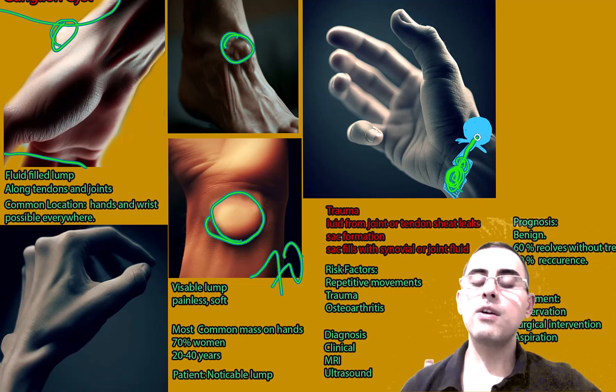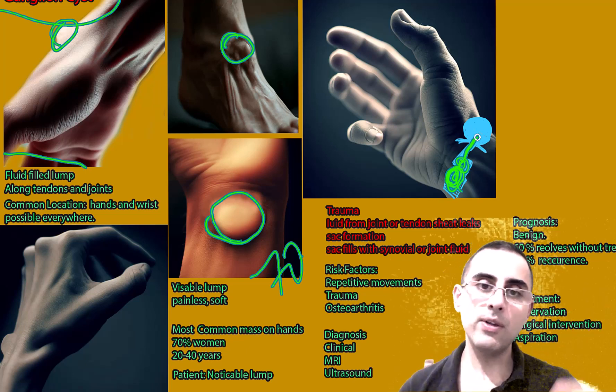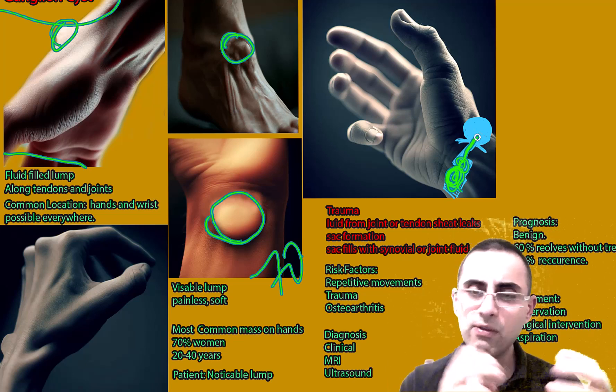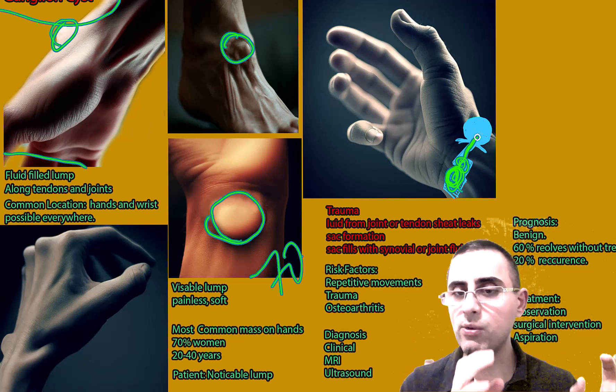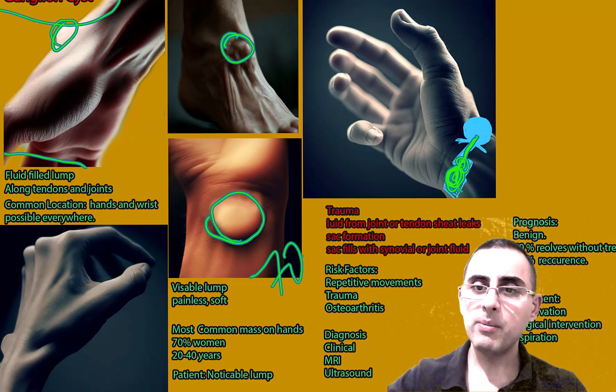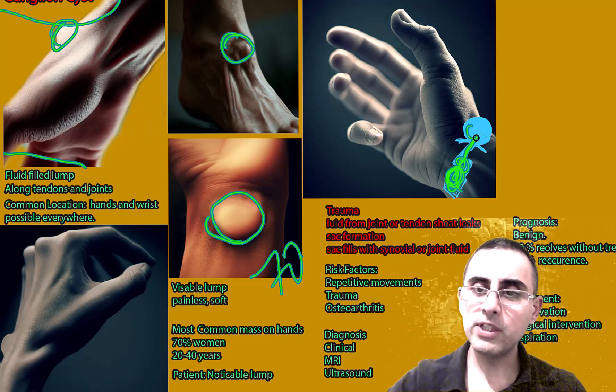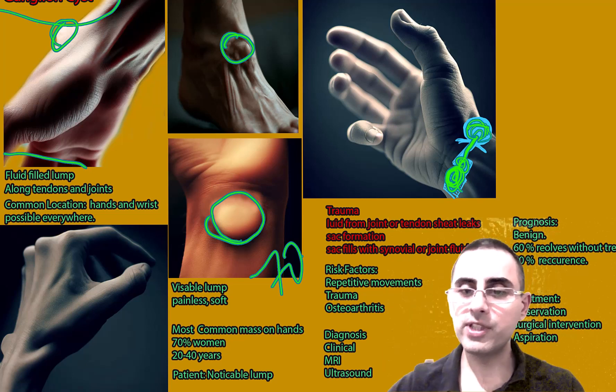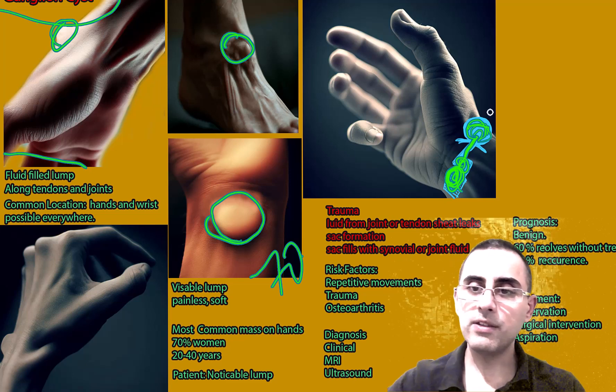This cyst is filled with synovial fluid, or fluid which is in joints. Joints also have their own fluid, but it's additional fluid which fills this sac, and a ganglion cyst is developed. This is called ganglion.